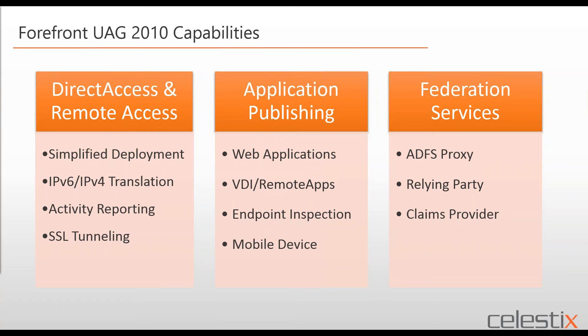The second area of Forefront UAG is application publishing — by far more prevalent than direct access. It was very flexible in how it published native web applications such as Exchange, SharePoint, Lync, and Dynamics, as well as VDI, remote apps, and thin applications through a web tunnel. A powerful feature was endpoint inspection — the ability to interrogate the device, whether Mac, Linux, or Windows — checking Windows Security Center alerts, firewall status, antivirus currency, and domain membership. That data was married with user information to create authorization rules controlling full, limited, or no access.